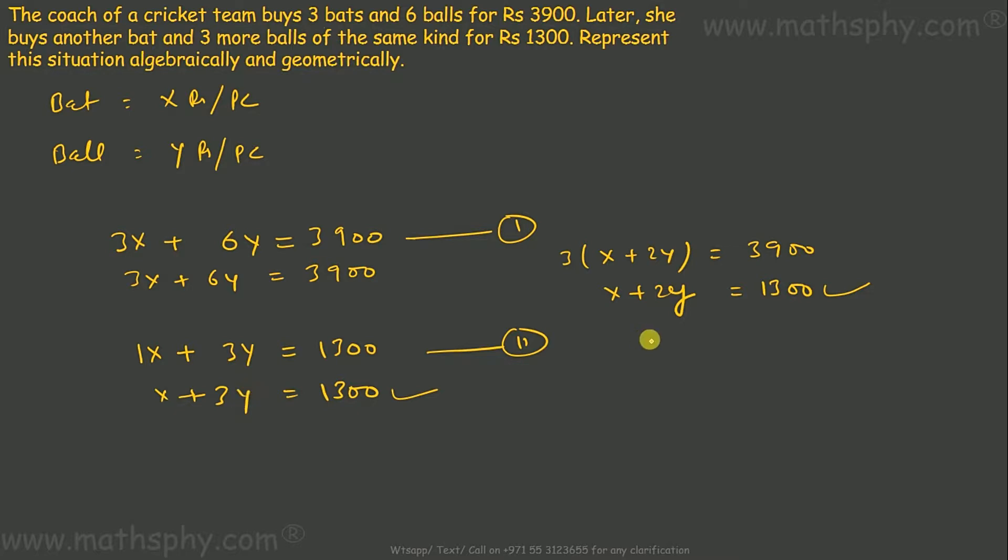For that I need 2y equals 1300 minus x. So y would be 1300 minus x over 2. And this would be 3y equals 1300 minus x. So y would be 1300 minus x over 3.